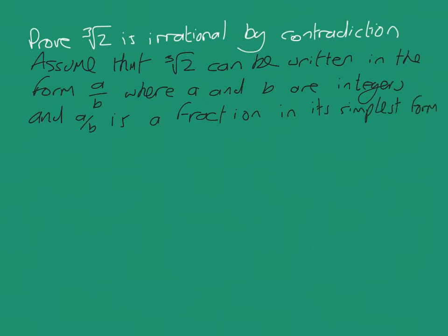And a over b is a fraction in its simplest form. Forming this statement is crucial. We need to be clear that a and b, there's no factor connection, so that a and b can't be simplified. There's no common factors. You could write that as well.